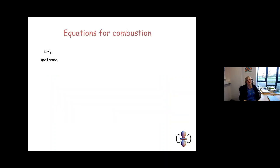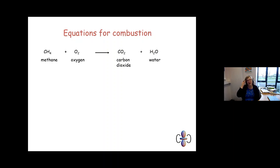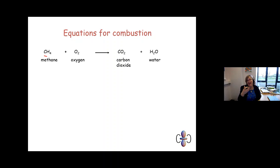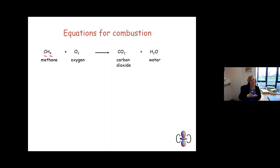Writing and balancing combustion equations is expected of you. A hydrocarbon always combines with oxygen (diatomic — O2) and always produces carbon dioxide and water. To balance: start with the carbons. Methane has one carbon, so you can only make one CO2. Then move to hydrogen — methane has four hydrogens, and since water contains two hydrogen atoms, four hydrogens produce two molecules of water.